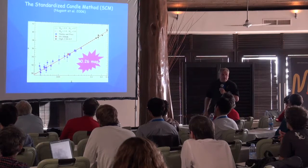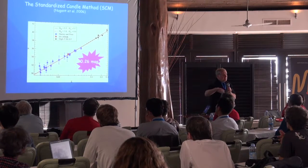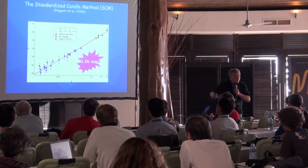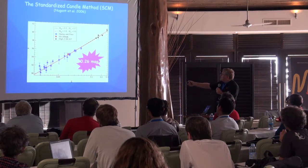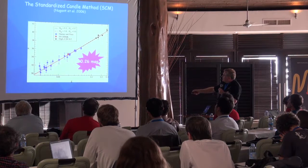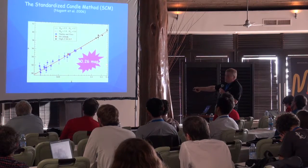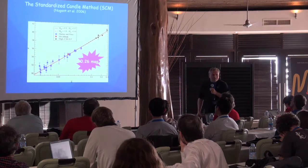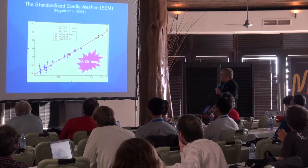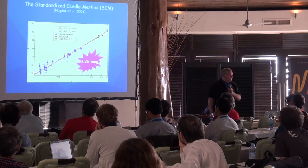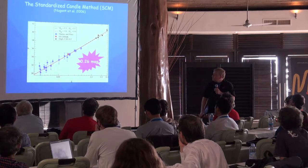Other people have explored this technique and implemented their own versions using different expansion velocities and different epochs. For example, the work by Nugent extended the Hubble diagram to what we used to call high redshift. And with a comparable dispersion of the order of 0.2 to 0.3 magnitudes, showing a Hubble diagram with 61 supernovae and two cosmological models.